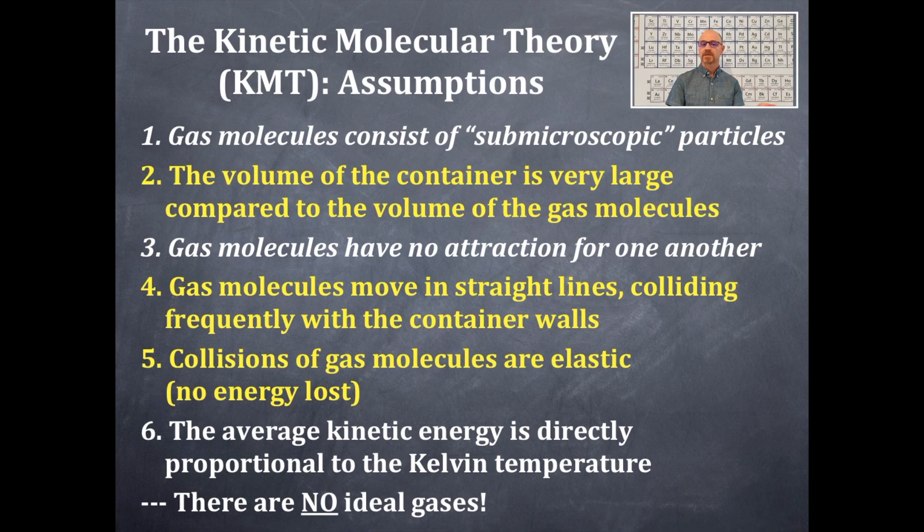If a gas follows all these different points, that's points one, two, three, four, five, and six, then that would be an ideal gas. But there are actually no ideal gases. These are just the assumptions to the kinetic molecular theory. And we'll find out later on as we progress forward that some of these assumptions don't really actually hold true. And then we have to apply other math to the problems.